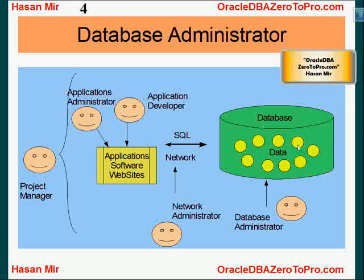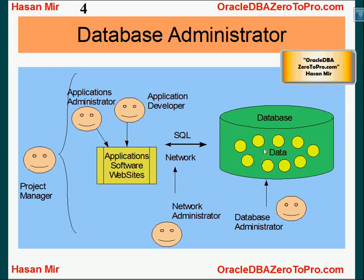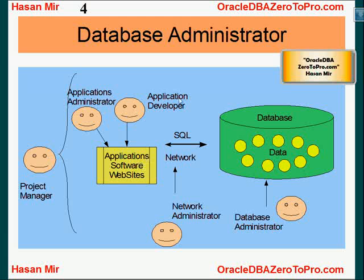Here is the database. It has data within it — the yellow circles represent data within this green database. This is the application server, and we have lots of applications running here, represented by the yellow box. Applications are talking to the database through the network. The person looking after the health of the network is the network administrator, and the person responsible for developing or modifying existing applications is the application developer.